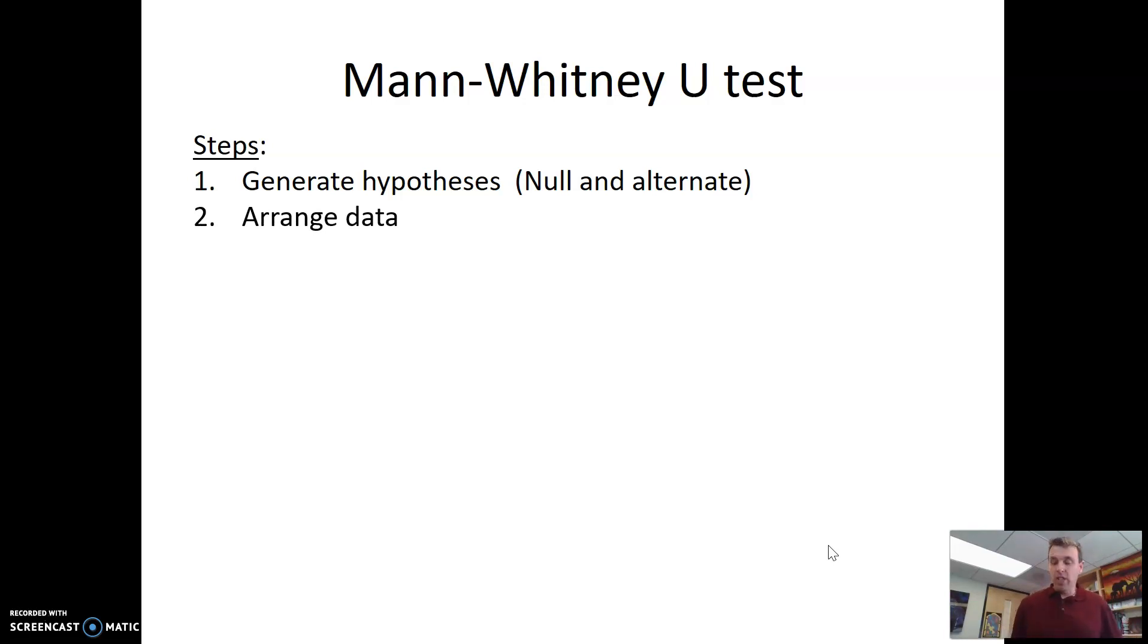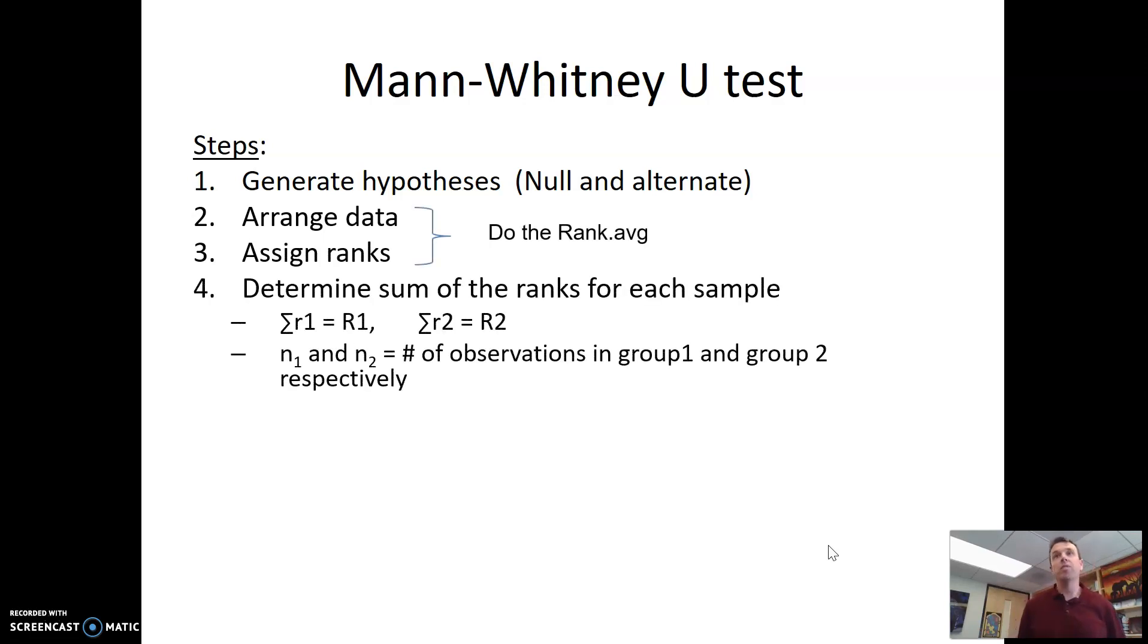Then you're going to have to arrange the data. So this is rankable data, so use the things we've learned about ranking data. Assigning ranks, so this is basically the rank averages. And then once we have the rank averages, we get the sums. So the sums of group 1 and the rank average sums of group 2. And so this also gets us another number, n1 and n2. So n, as usual, is just the number of replicates in group 1 and the number of replicates in group 2.